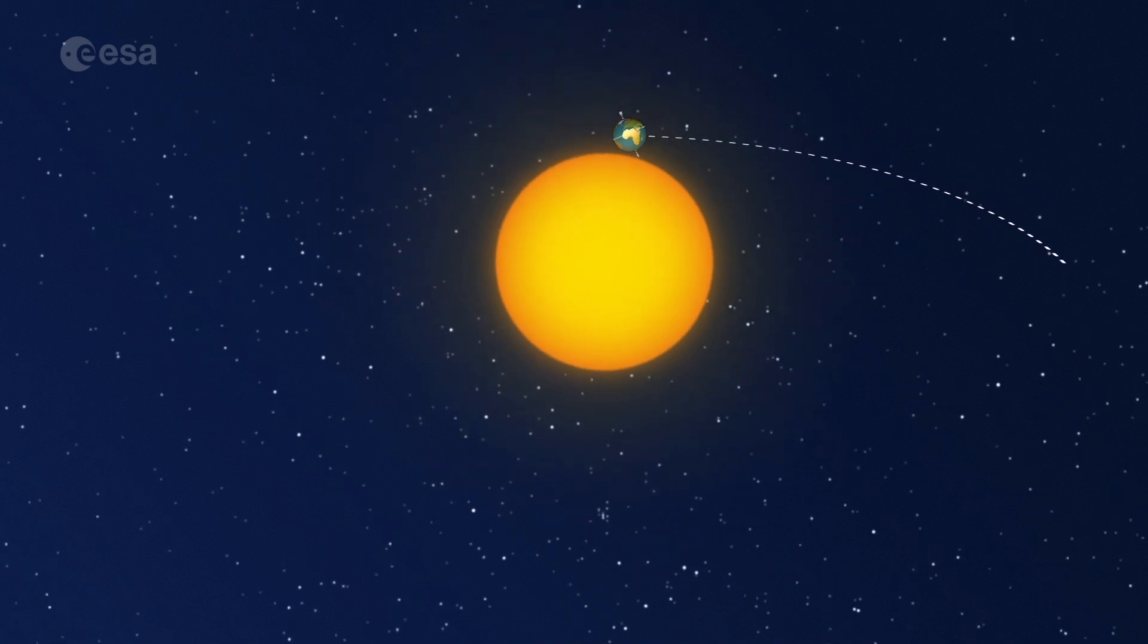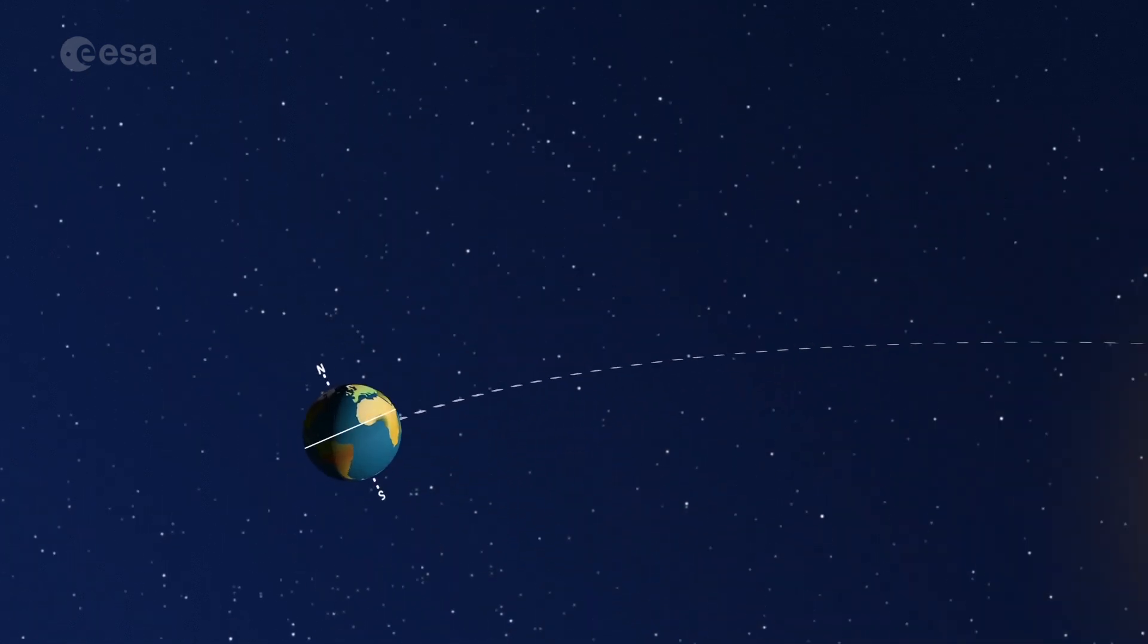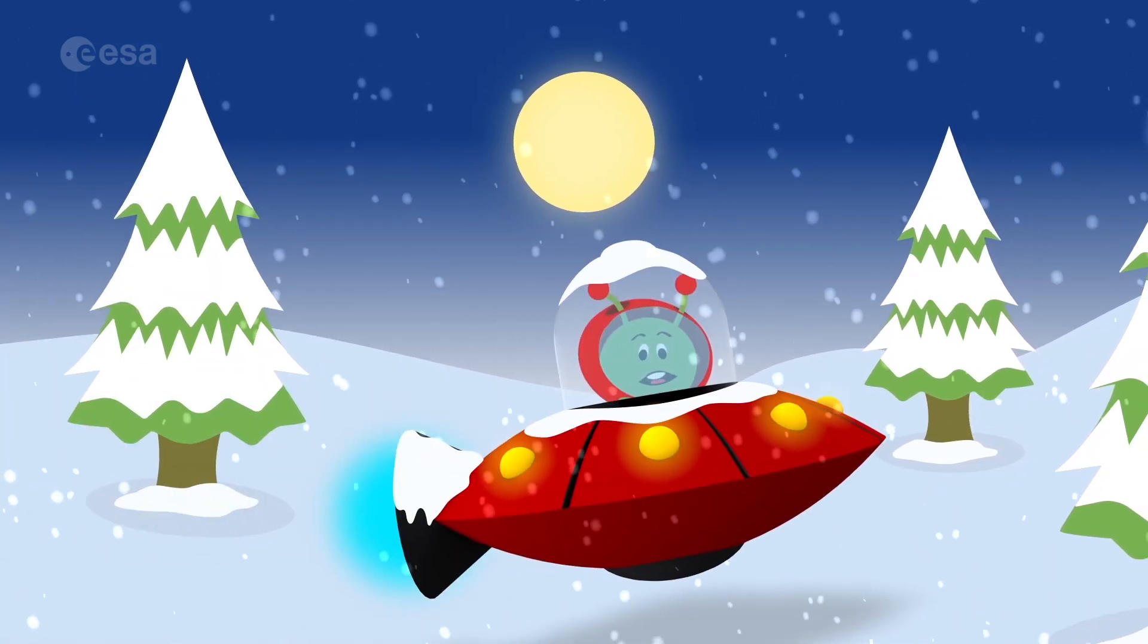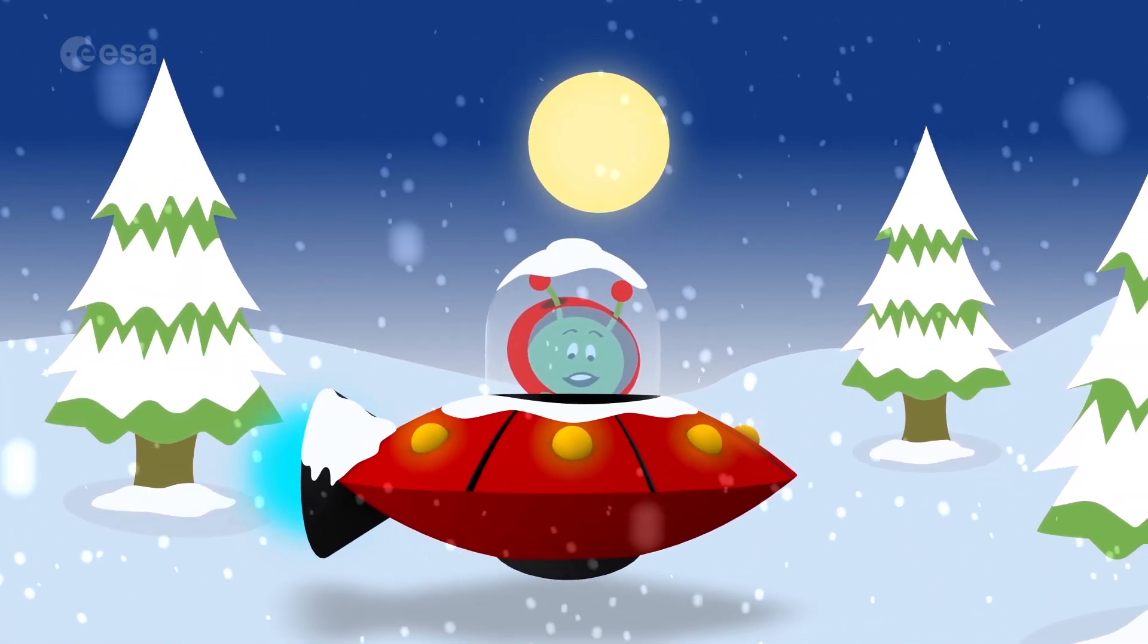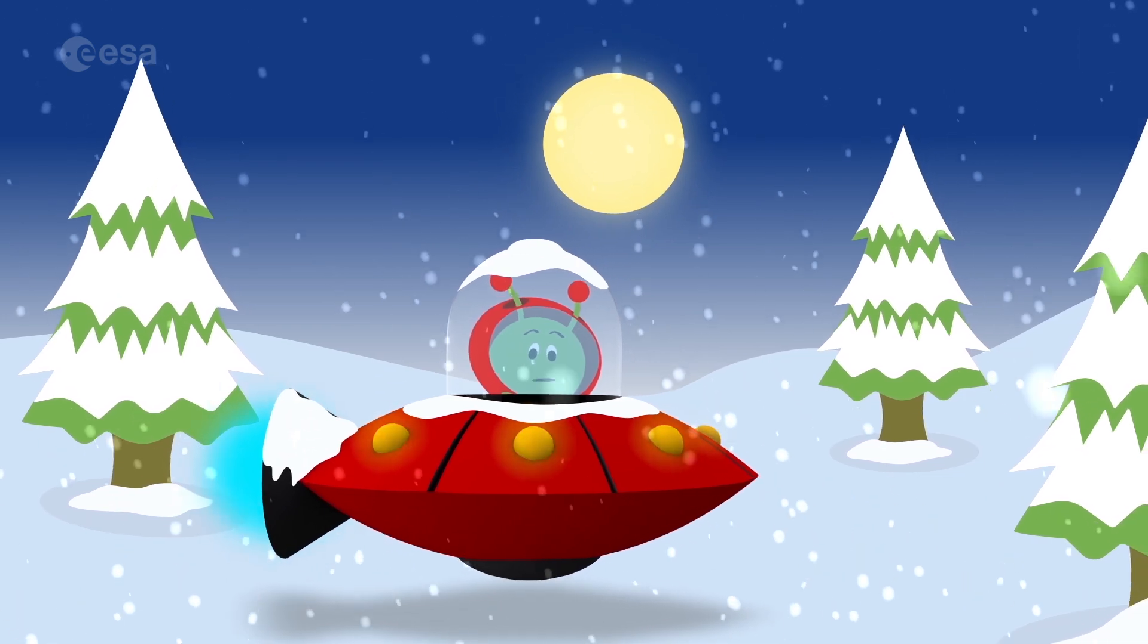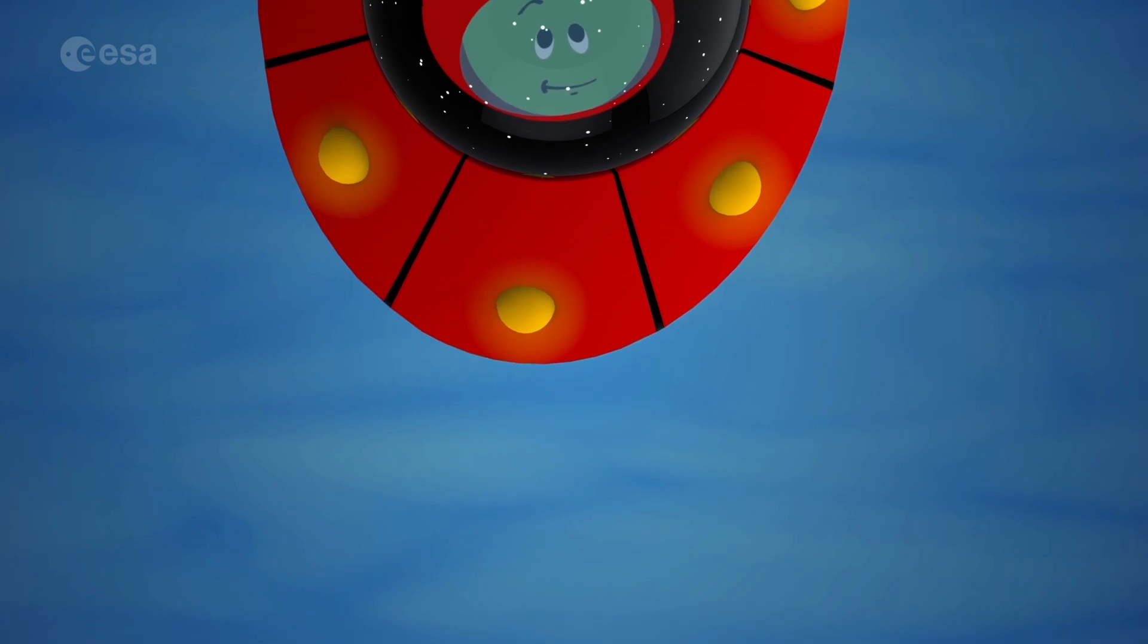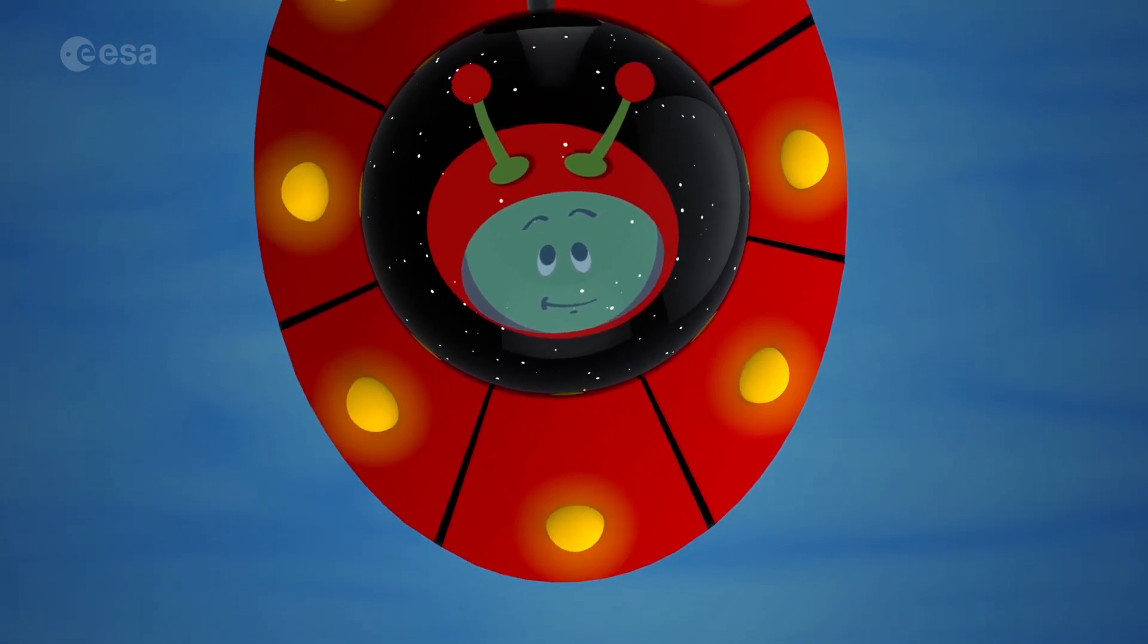When the northern hemisphere is tilted away from the sun, it's winter there. The sun appears to be lower in the sky, so we get less light and less warmth. Not so good for beach holidays, but good for stargazing.